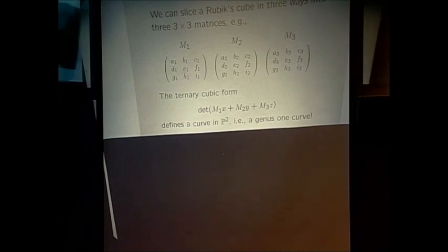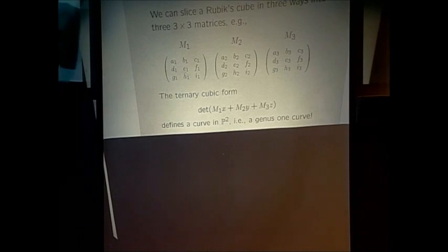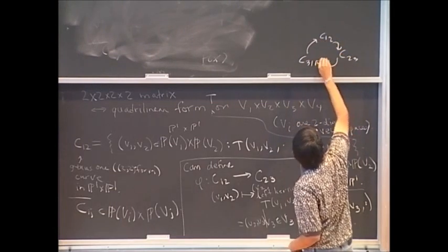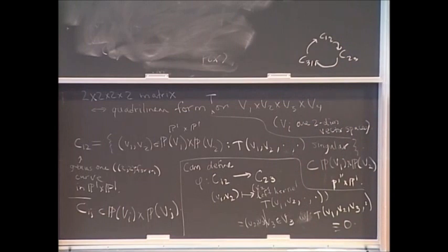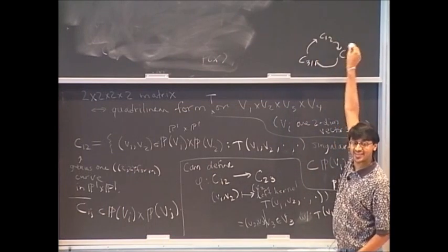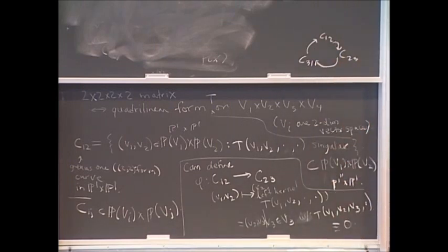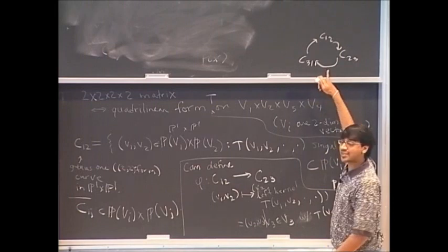For the same reason as in the hypercube case, these three ternary cubics cut out isomorphic genus one curves in the plane. The isomorphism diagram is simpler: you have C12, C23, C31, and just isomorphisms going around given by taking kernels. You get only one point on the Jacobian. So you get a genus one curve with a degree three line bundle — since you're embedding in the plane — together with one non-zero point on the Jacobian.